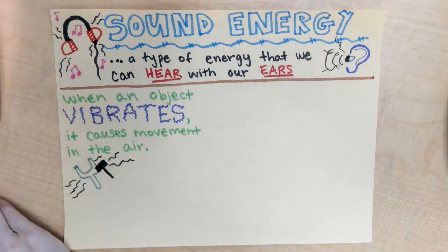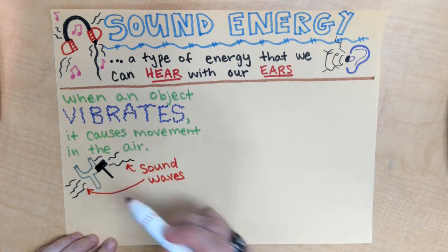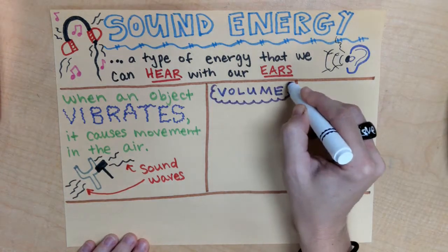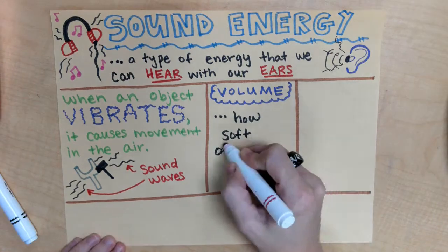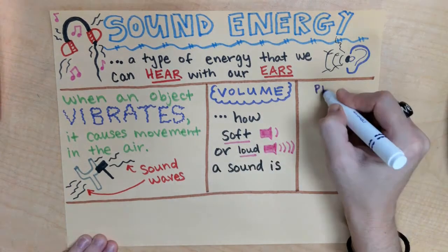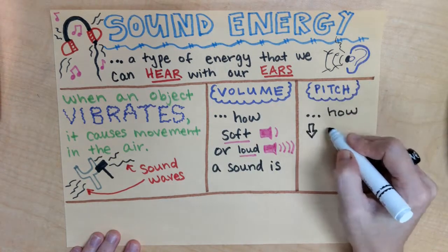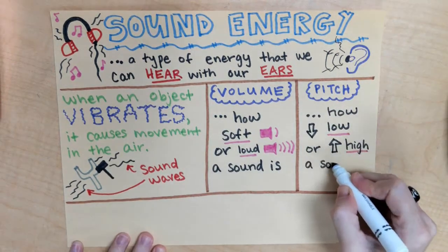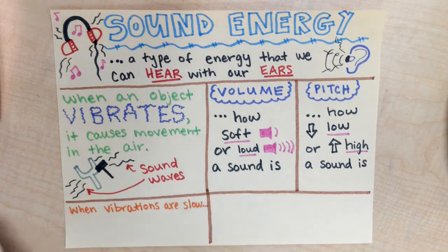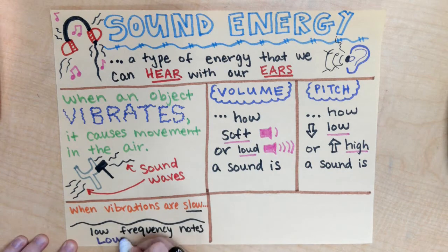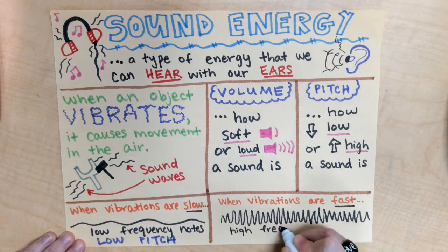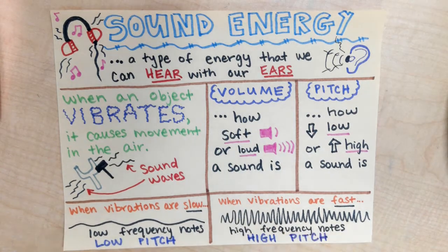When you talk about volume, that's either how soft or how loud a sound is. And with pitch, that either means how low or how high a sound sounds. When sound energy happens, all those vibrations moving through the air can either go really slow — and that'll be a low pitch — or they can go really fast and it'll be a high-sounding pitch.